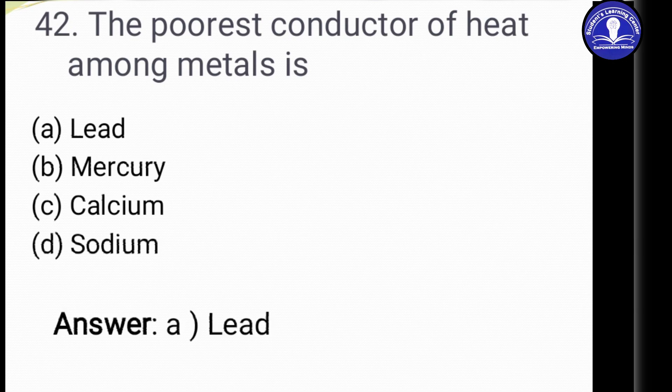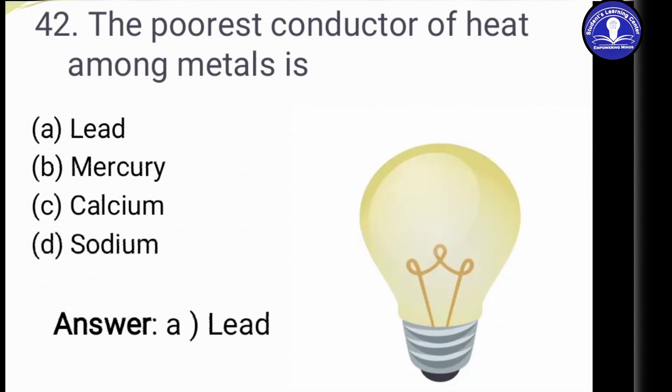The answer is Option A, Lead. Among metals, lead is the poorest conductor of heat. However, other metals like bismuth and tungsten are even poorer conductors than lead. That is why we use tungsten in electric bulb filaments — because it has high resistance, and when current passes through it, it glows brightly.